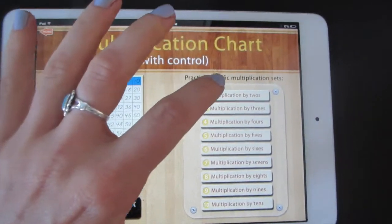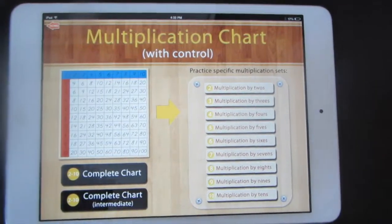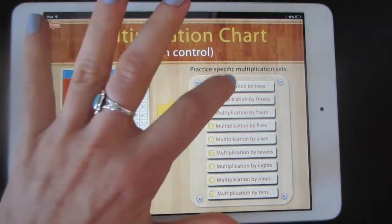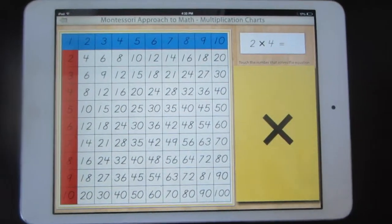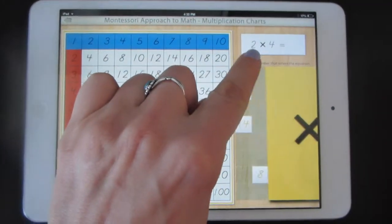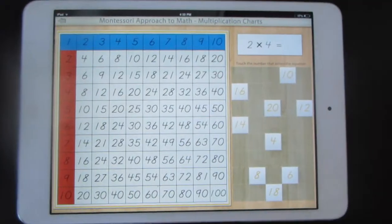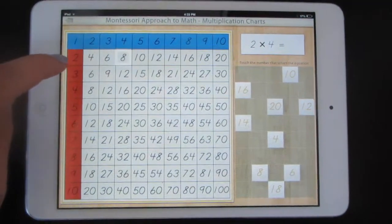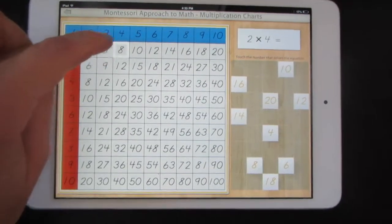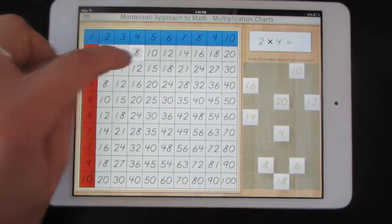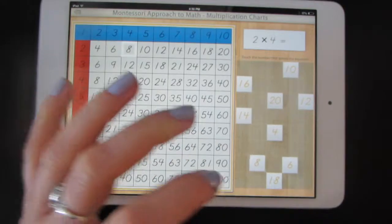Then tap multiplication by twos to practice your two timetables. The problem will appear here: two times four equals. Watch how they use the chart to figure out two times four equals eight. Find the eight.